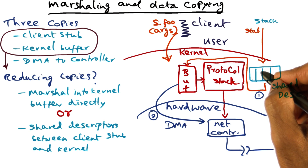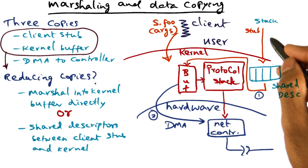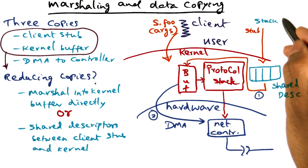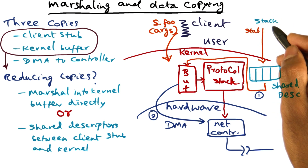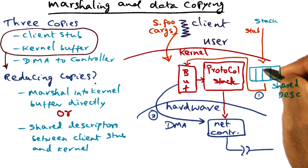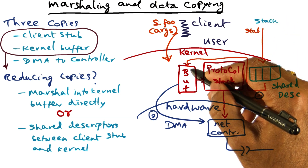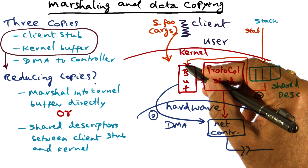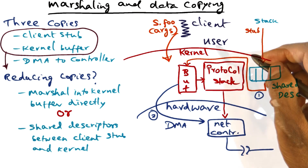The shared descriptor is a way by which the stub can describe to the kernel that here is some stuff sitting in the user space, and I'm going to tell you how exactly you can extract this information from the user space and construct it into this buffer for transmission on the wire.